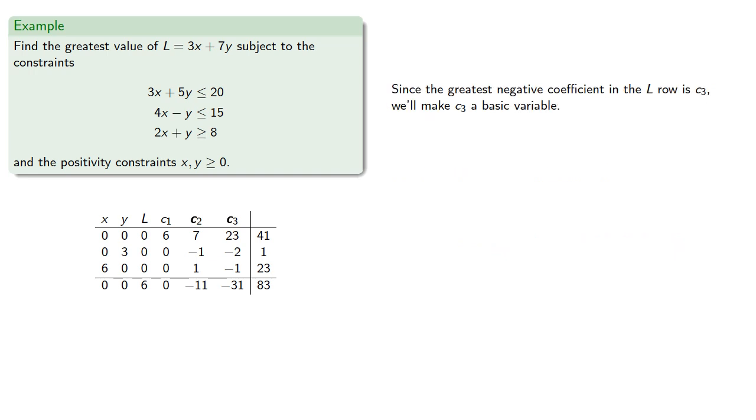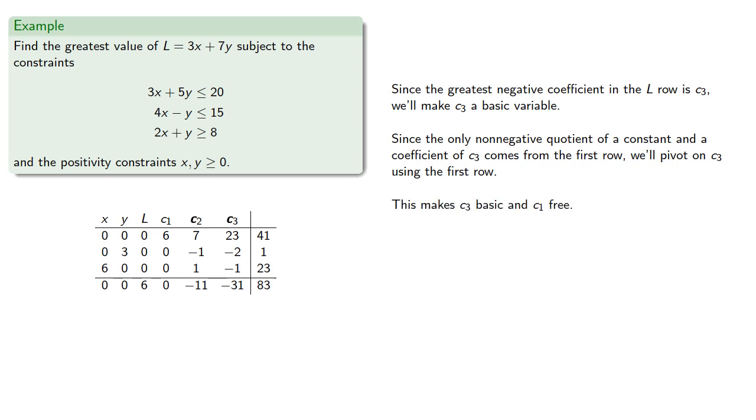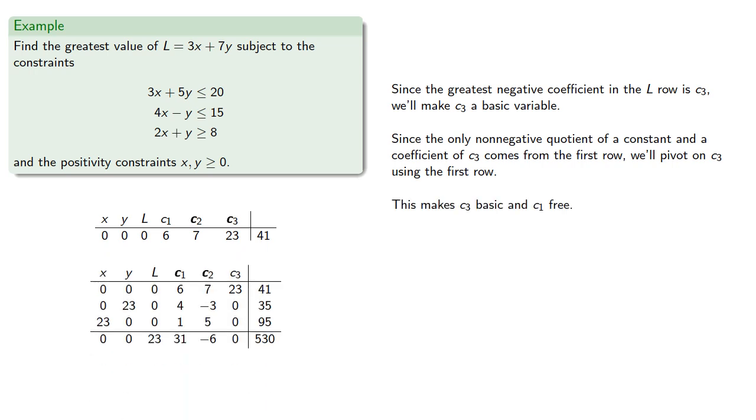So now, since the greatest negative coefficient in the L row is c3, we'll make c3 a basic variable. Since the only non-negative quotient of a constant and a coefficient of c3 comes from the first row, we'll pivot on c3 using the first row. This makes c3 basic and c1 free. And so we get...